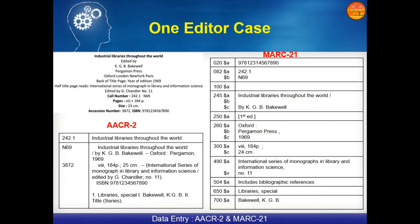250 will contain the edition detail — if it is a first edition, generally we don't provide the information, or if you want to write it you can write it in square brackets. 260 will contain the publication detail, 300 physical description, 490 the series, 500 will contain the general note information, 650 will contain the subject, and 700 will contain the information about the added entry.